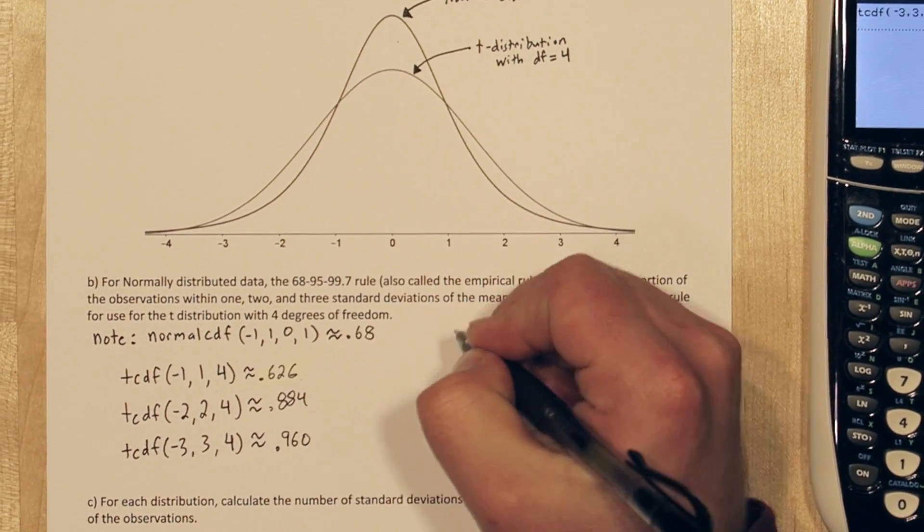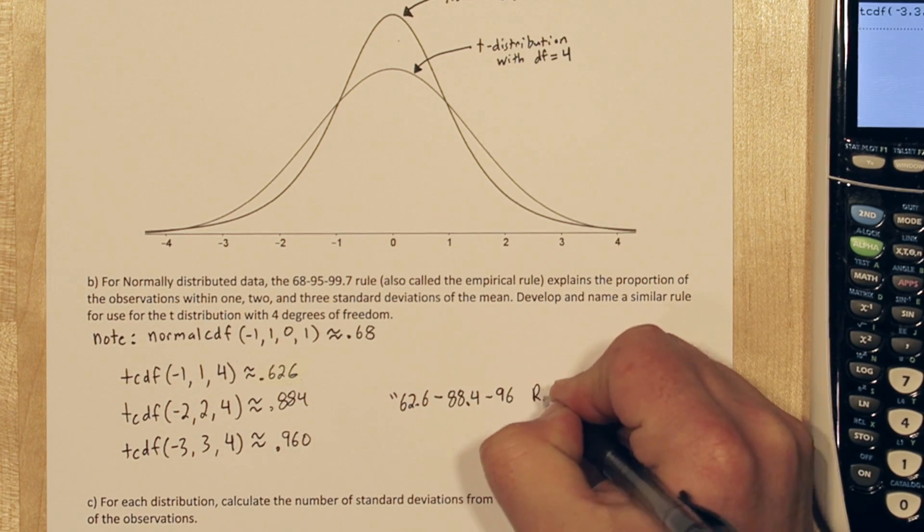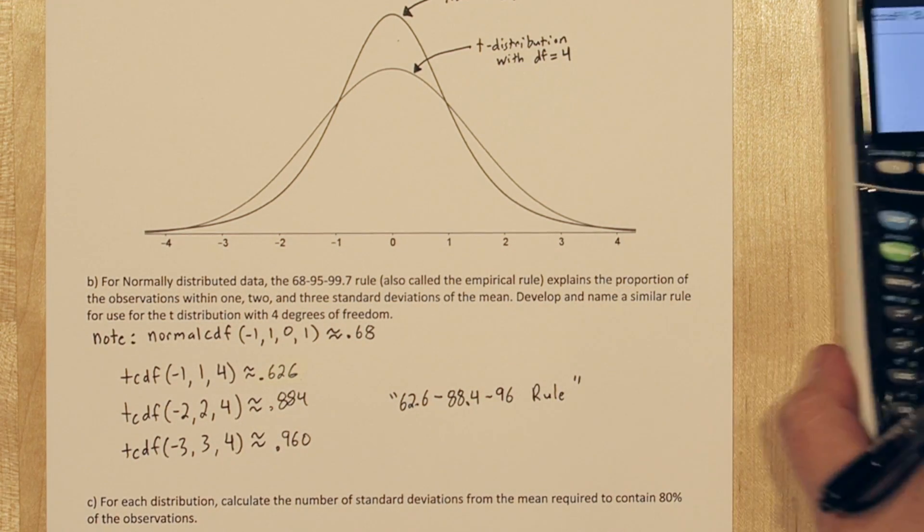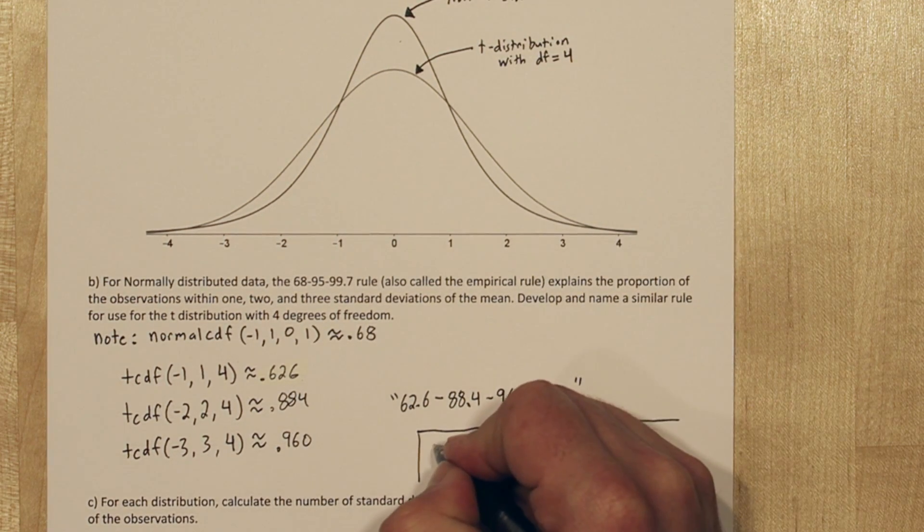So I guess our rule will be the 62.688.496 rule. Doesn't quite have the same ring, but that's what it is for 4 degrees of freedom.